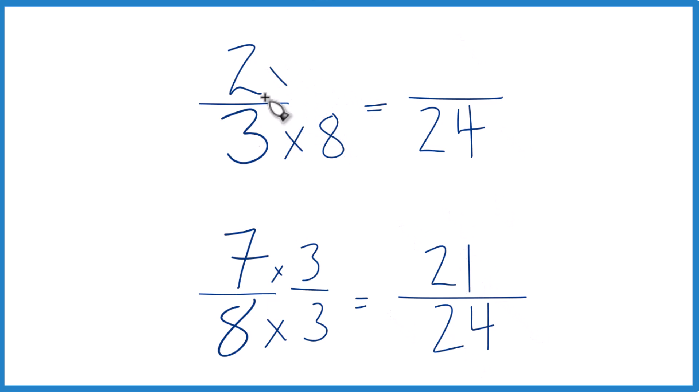Two times eight equals 16. Now we have the same denominator, we can compare the numerators. You can see 21 is larger than 16, so 21/24 is larger than 16/24. These are equivalent, so seven-eighths is larger than two-thirds.